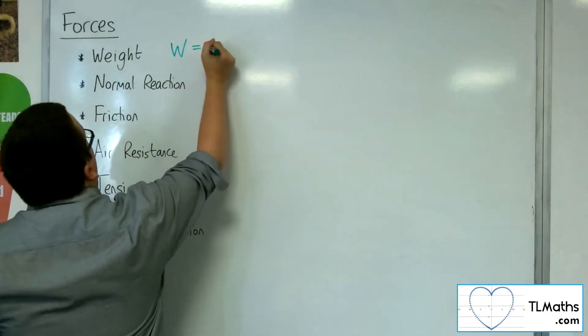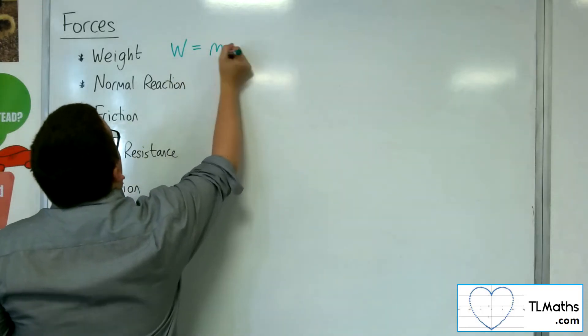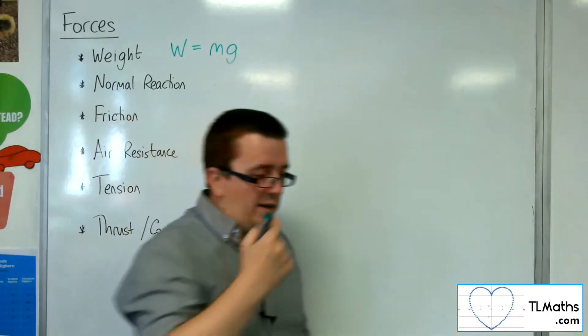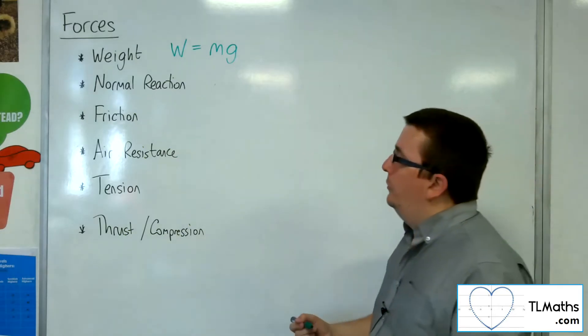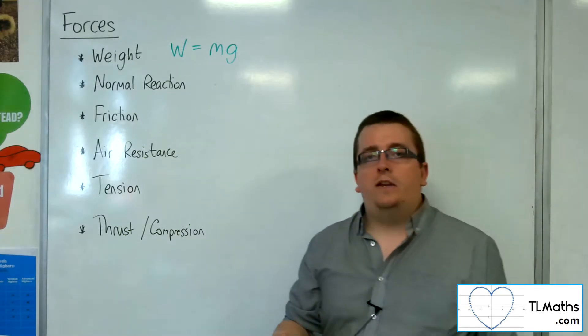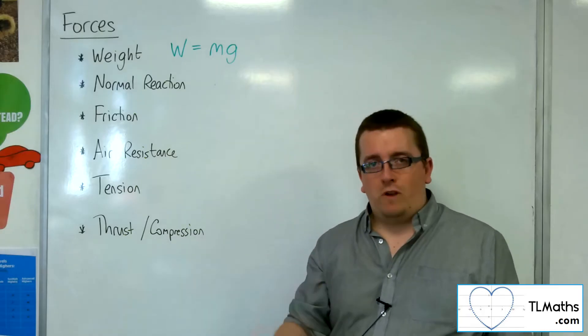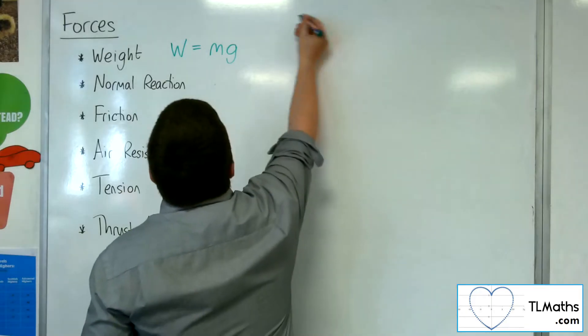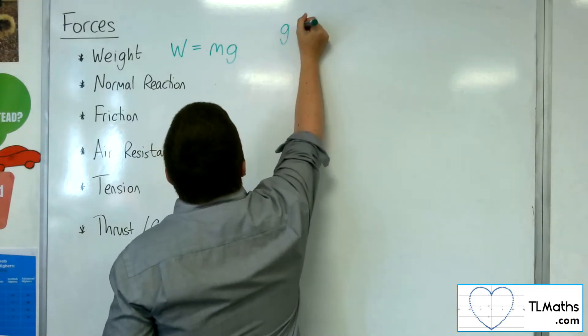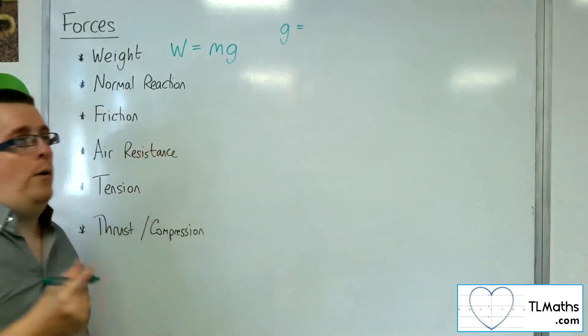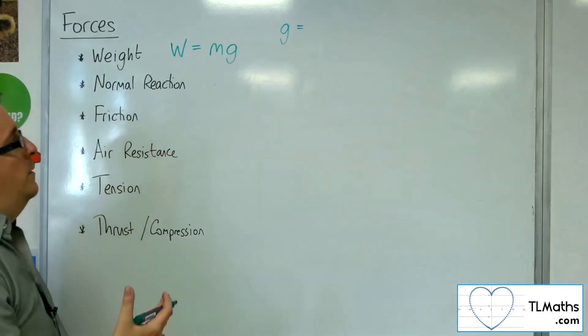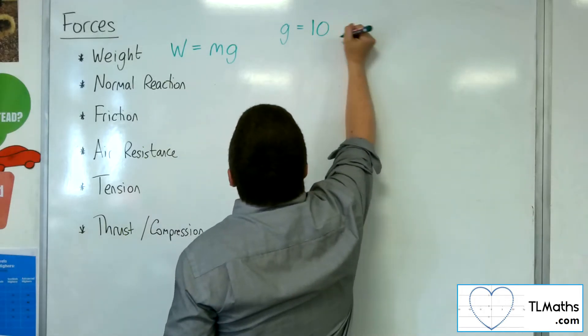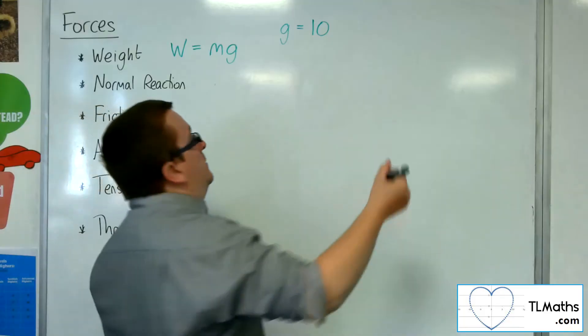Weight, which we often write as W, is given by the mass of an object times by g, gravity. Now g here isn't representing grams, it's representing the acceleration due to gravity. On the Earth, g is approximated a few different ways, depending on how accurate the problem is.